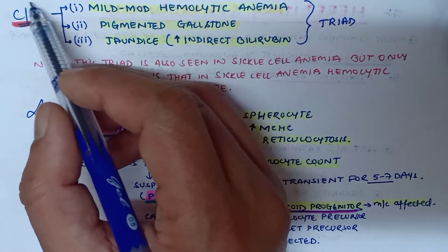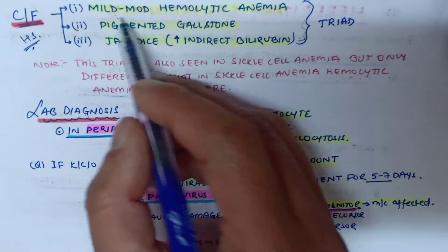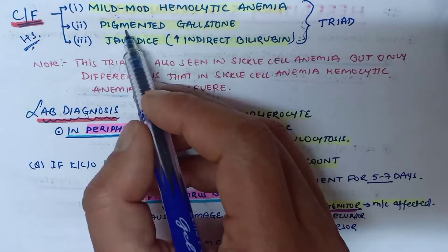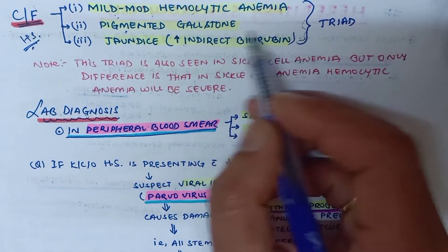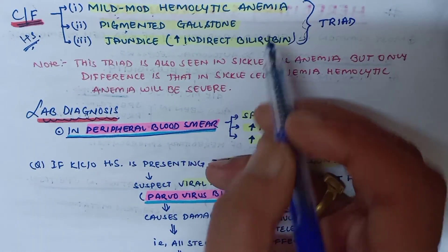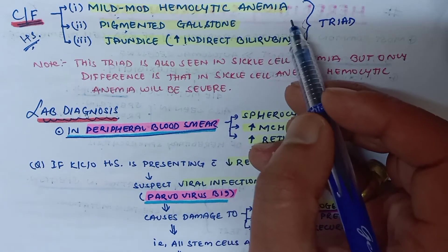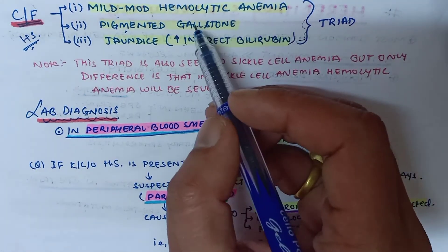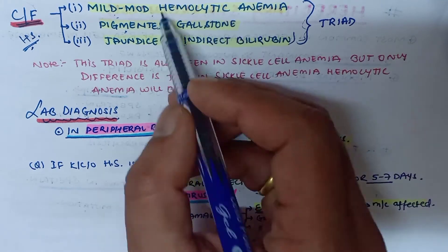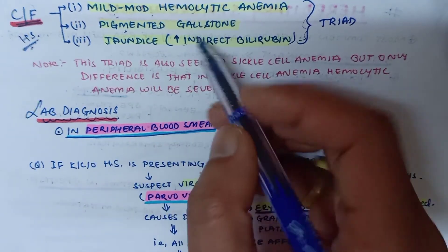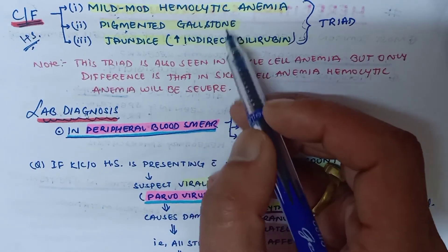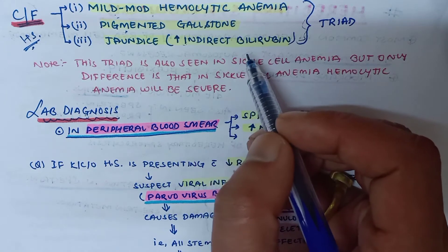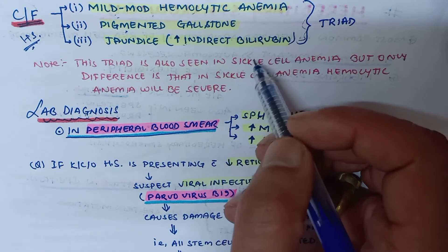The characteristic features of hereditary spherocytosis are a triad of mild to moderate hemolytic anemia, pigmented gallbladder stones, and increased indirect bilirubin presenting as jaundice. This triad is also seen in sickle cell anemia, but the difference is that sickle cell anemia presents with severe hemolytic anemia, pigmented gallbladder stones, and increased bilirubin level.